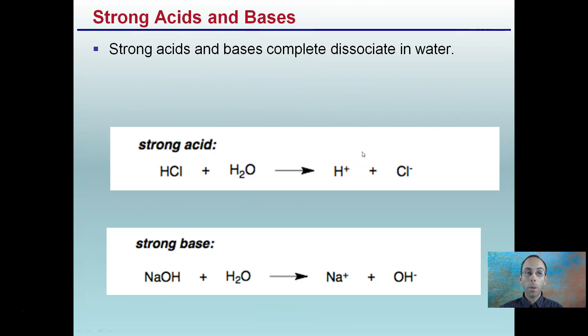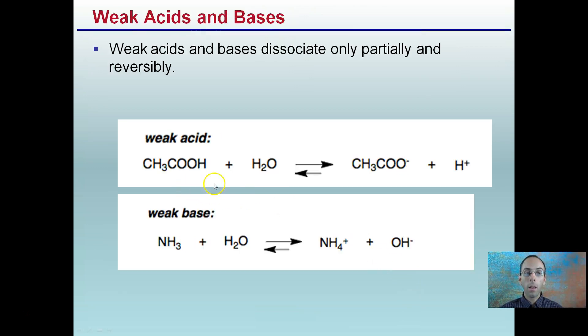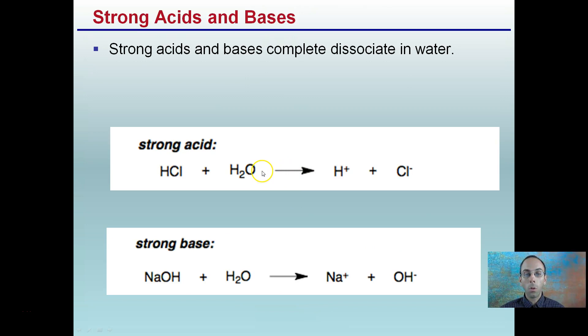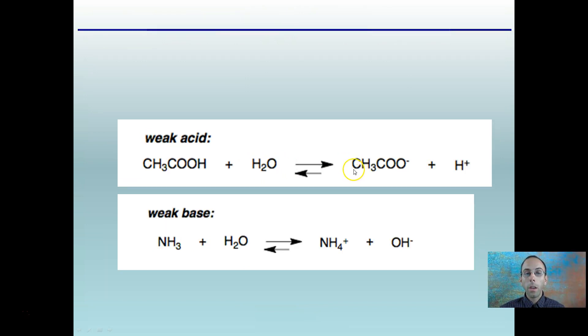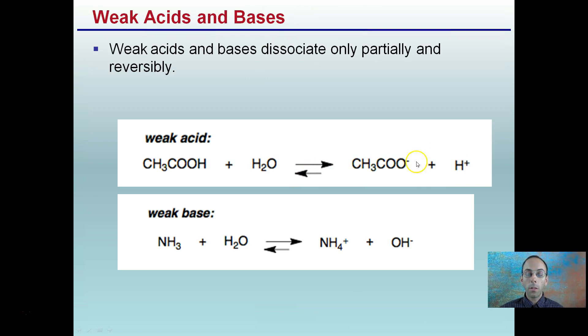There's something called strong acids and strong bases. Strong acids and bases completely dissolve in water, as we see here. HCl dissolving completely into hydrogen ions and chloride ions. Sodium hydroxide into sodium ions and hydroxide ions. In contrast, we have weak acids and weak bases. These dissociate only partially and are reversible. With strong acids, the arrow goes one way. Here we have this state of equilibrium going back and forth. This is an example of a weak acid and weak base because it doesn't just go to completion in one way and completely dissociate.